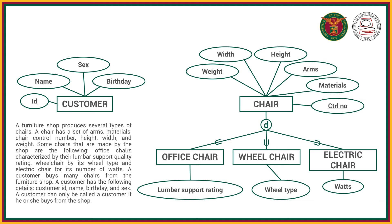For the constraints: constraints in our diagram depend on the context of the problem or the business logic. We'll assume this is disjoint, since an office chair cannot be a wheelchair at the same time. For completeness, since it is not specified that all chairs belong to a specific subtype, this is a partial specialization — there might be some chairs with no special attribute.